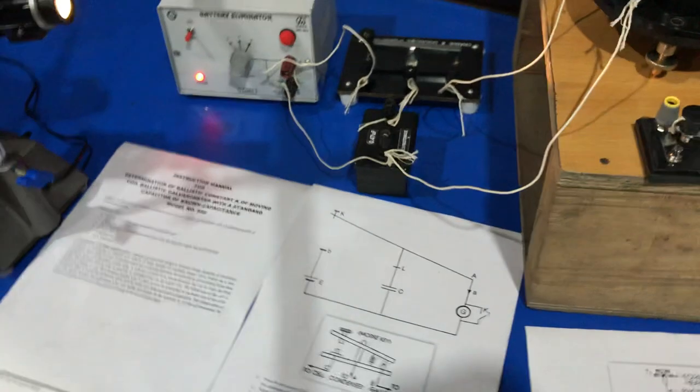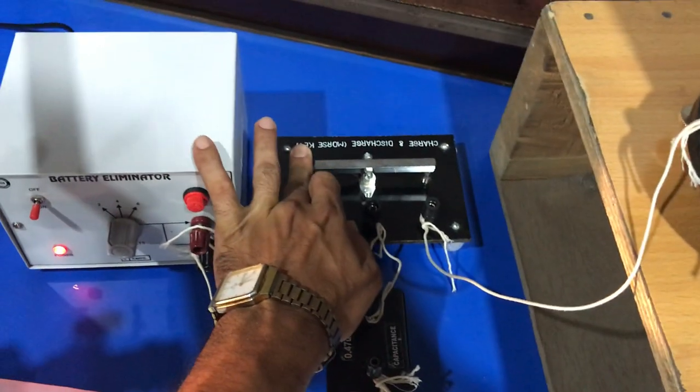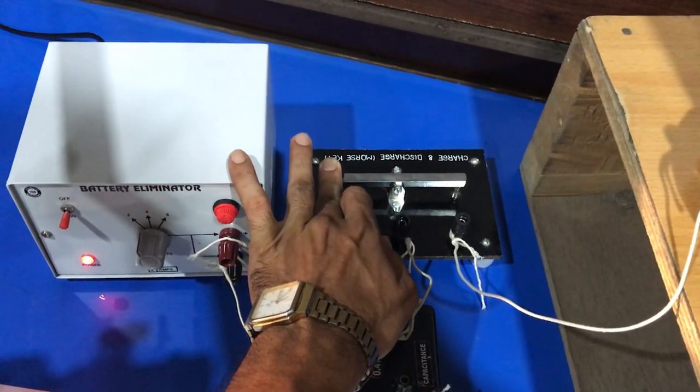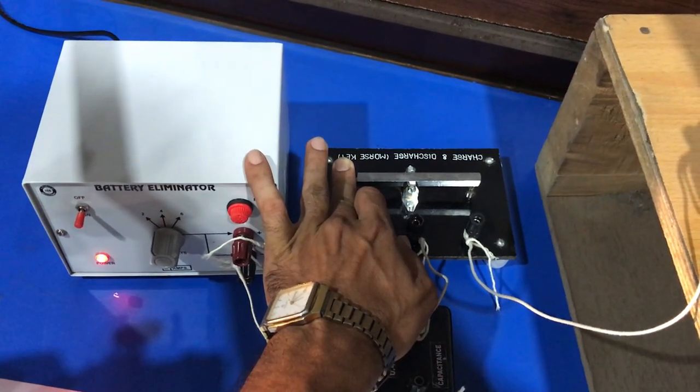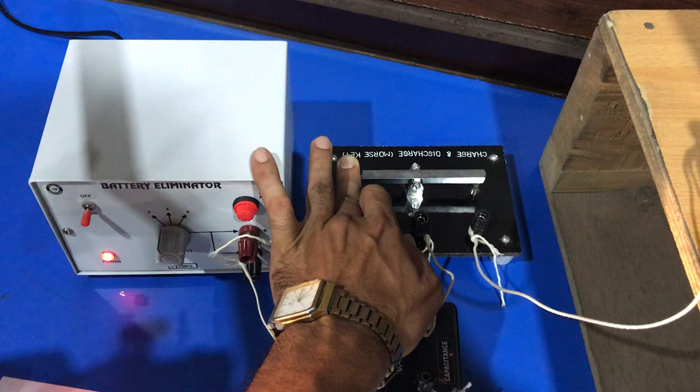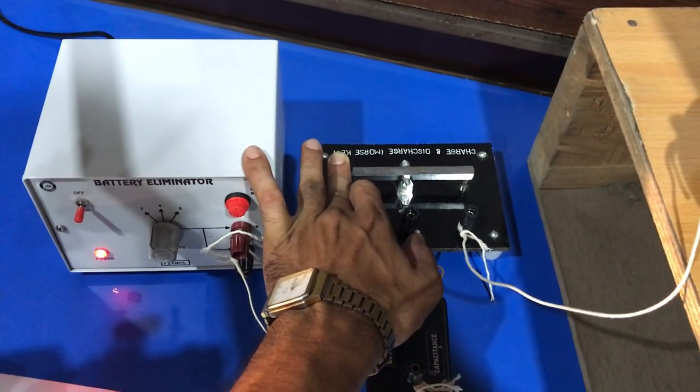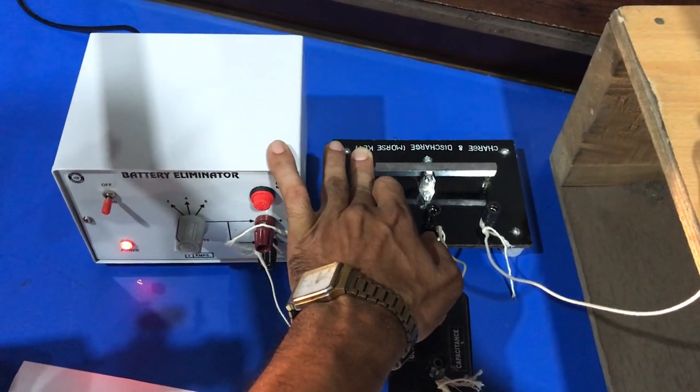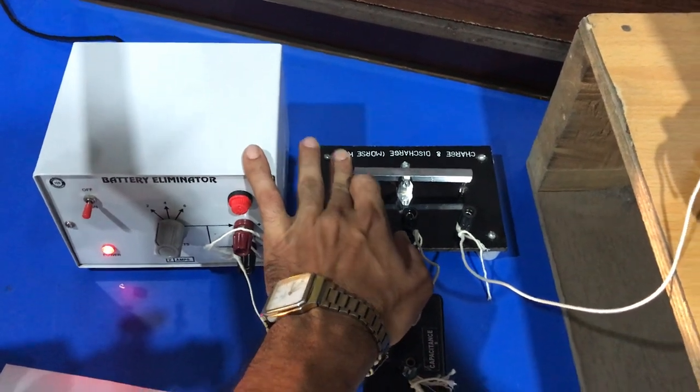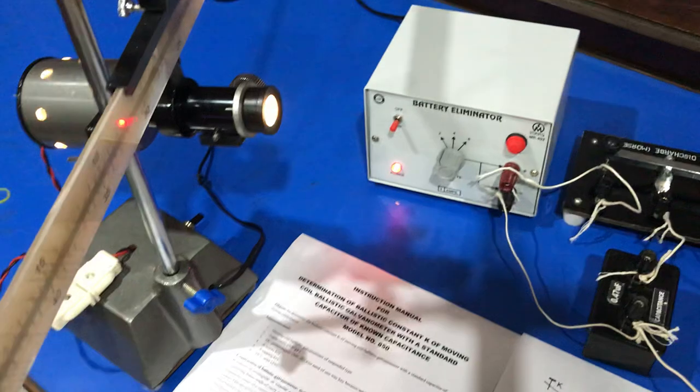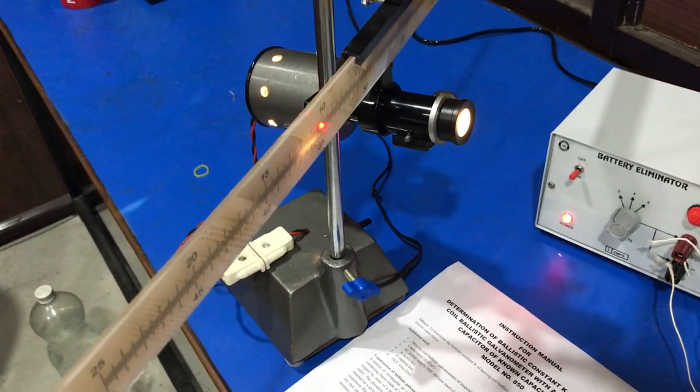Now, in order to perform this experiment, first we charge the capacitor by pressing the Morse key for 20 seconds. During this time the capacitor charges. Now when we release the Morse key, we observe that there is a deflection of light on the scale.